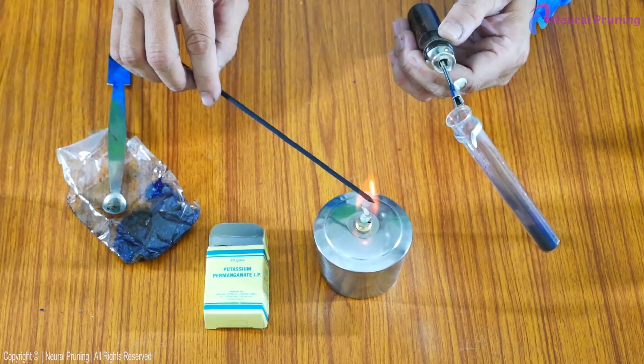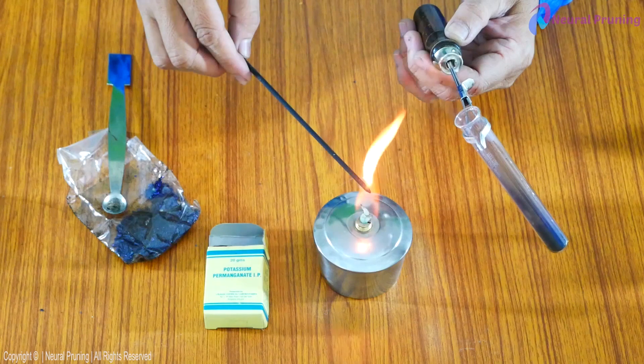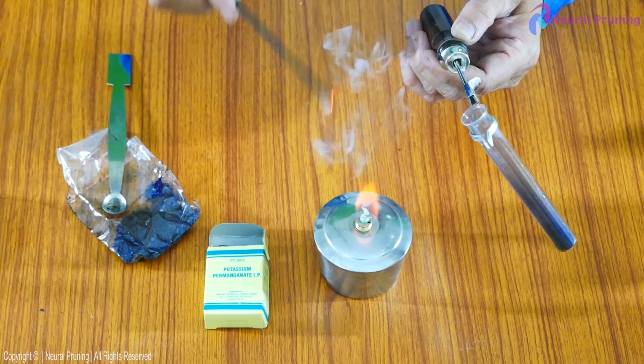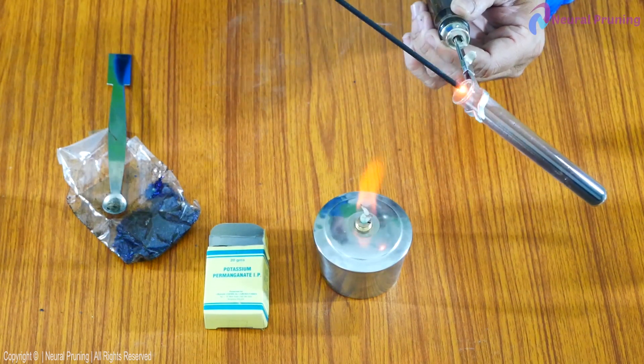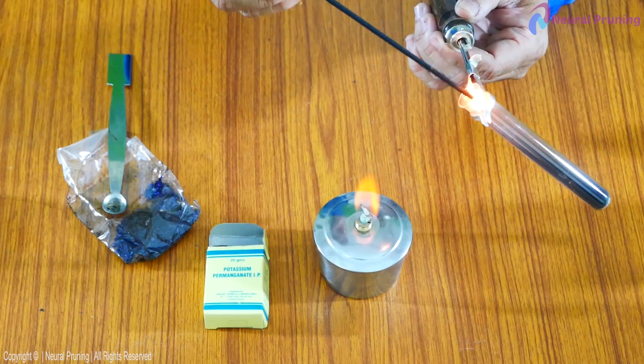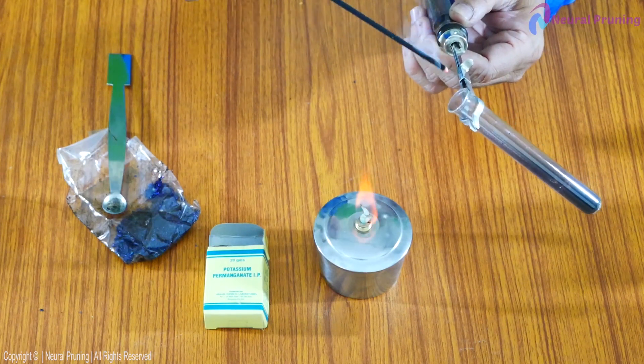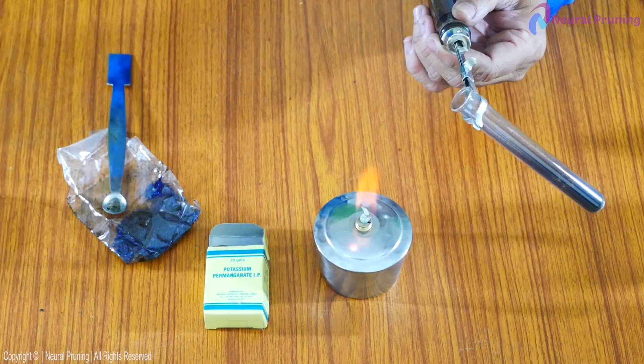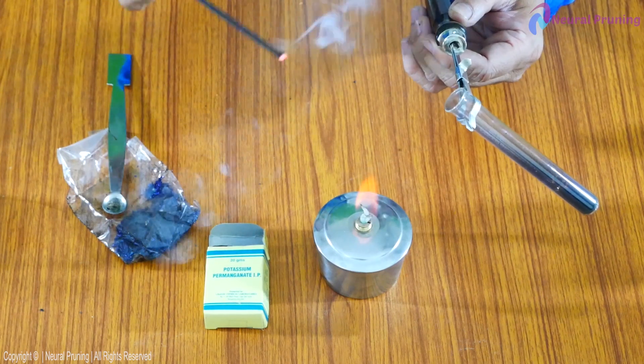Now, observe, I am bringing a burning splinter or this incense stick to the mouth of test tube. What you are observing? This indicates oxygen is released during the decomposition of potassium permanganate.